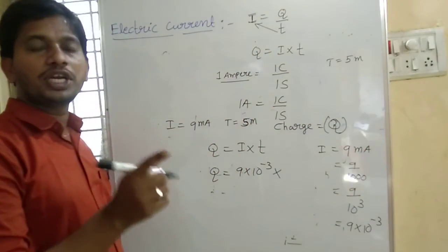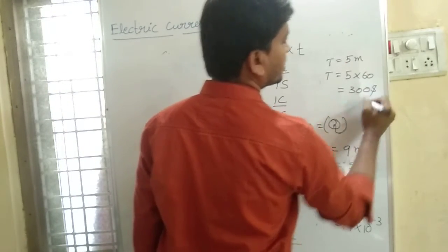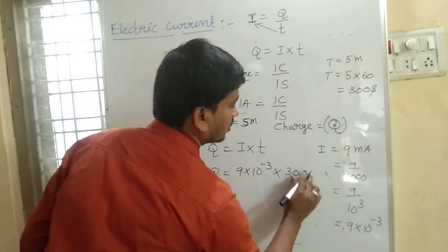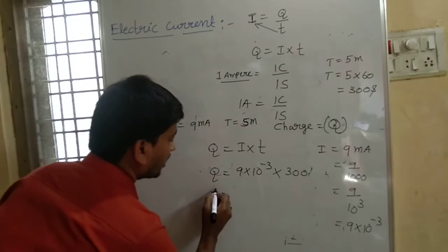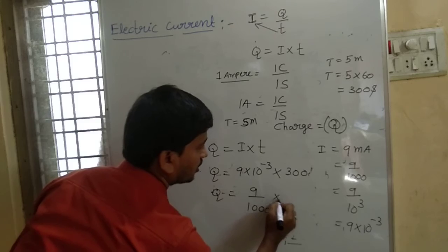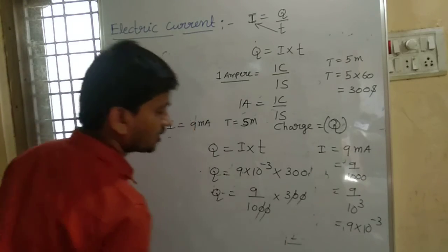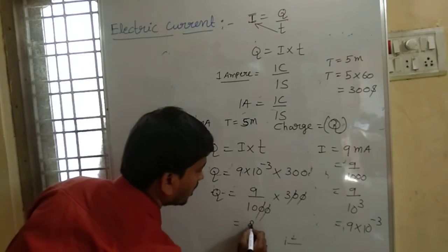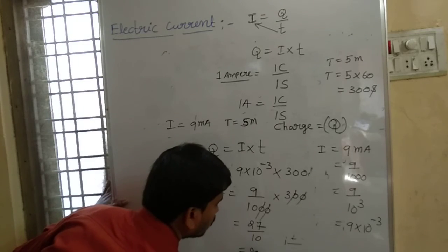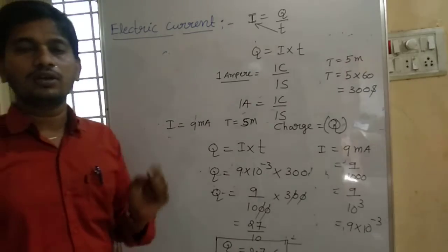So Q equal to I into T equals 9 by 1000 into 300. The zeros cancel, giving 9 into 3 divided by 10, which is 27 by 10, equal to 2.7 Coulombs. So the charge is 2.7 Coulombs.